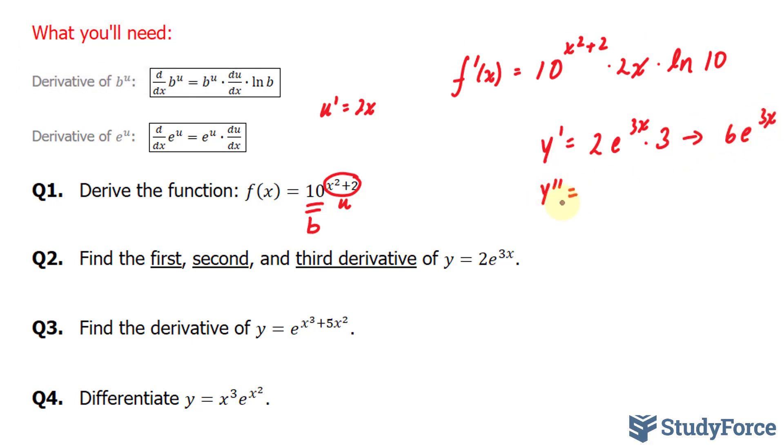Now y''. We have 6e^(3x) times 3 which gives us 18e^(3x). I multiplied the 3 and the 6 together. And y''' is equal to 18e^(3x) times 3 which is equal to 54e^(3x). These are your three answers.